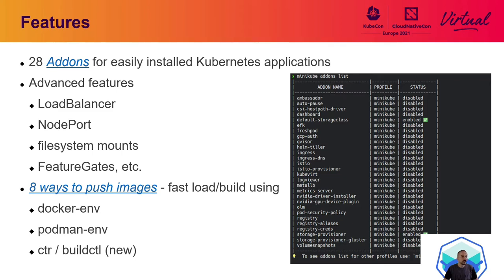This is not a definitive list of all Minikube features, more of an overview of the most important or recent ones. Currently there are 28 add-ons you can use to easily install Kubernetes applications. Two of them are installed by default: the default storage class and storage provisioner. You can see all supported add-ons with the minikube addons list command, and to install additional add-ons you can use minikube addons enable. You can also disable and configure add-ons, and simply use minikube addons to get detailed usage help.